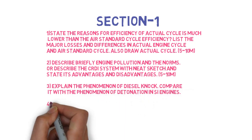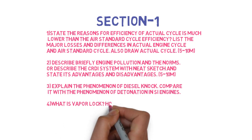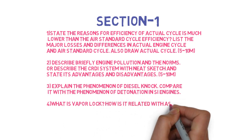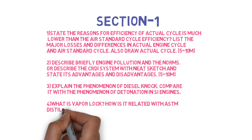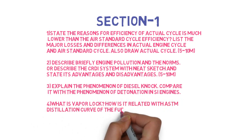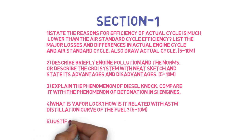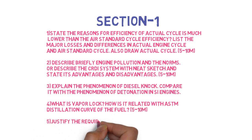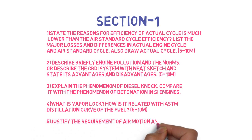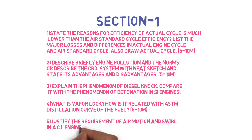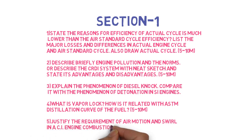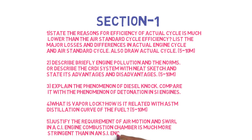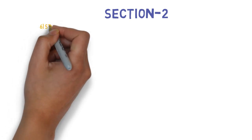Next is: What is vapor lock and how it is related with ASTM distillation curve of the fuel? This can come for 5-10 marks. Next is: Justify the requirement of air motion and swirl in CI engine, and combustion chamber is more stagnant than an SI engine. This can come for 5-10 marks. So these were the 5 questions for Section 1.